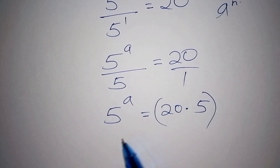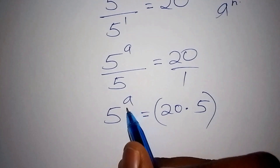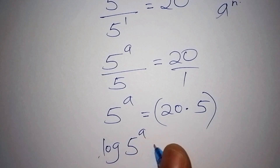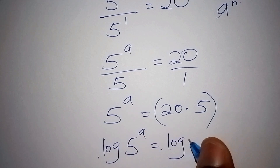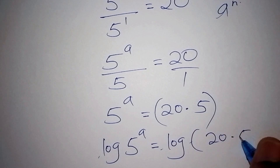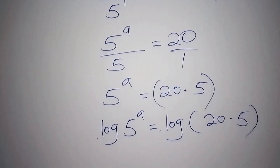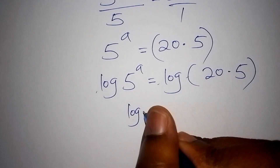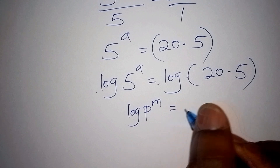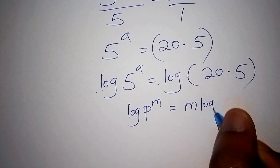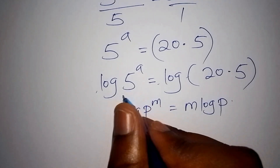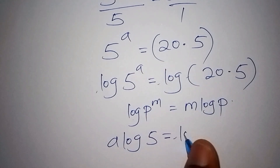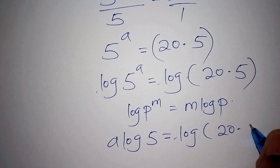From there we can remove the exponent a by introducing the log. So we have: log of 5 to the power of a equals log of 20 multiplied by 5. Our next step uses the rule that log of p to the power of m can be written as m times log of p. So log of 5 to the power of a becomes a times log of 5, equals log of 20 multiplied by 5.